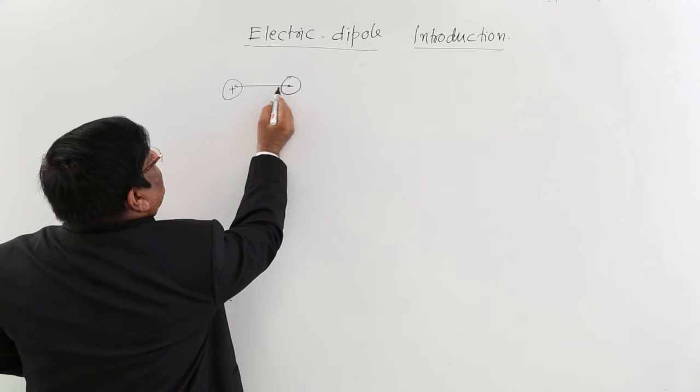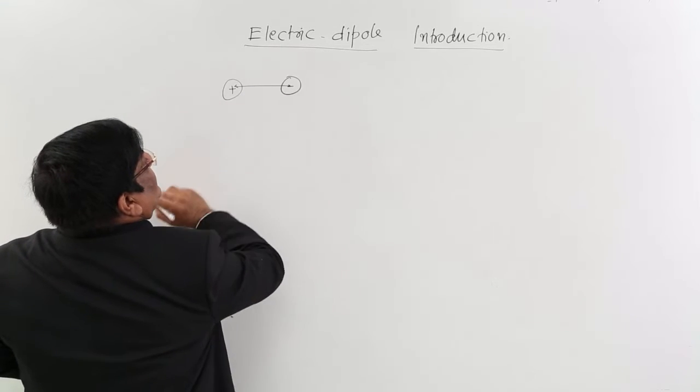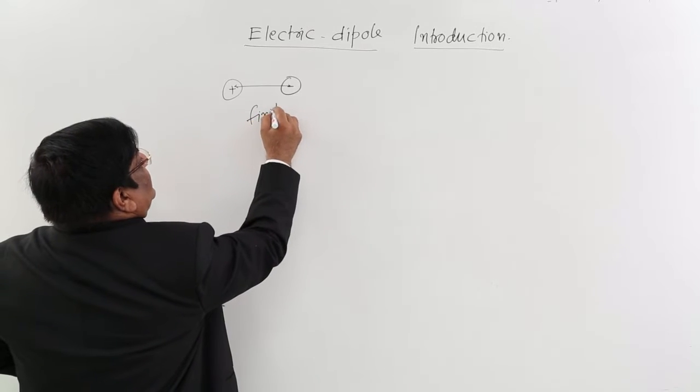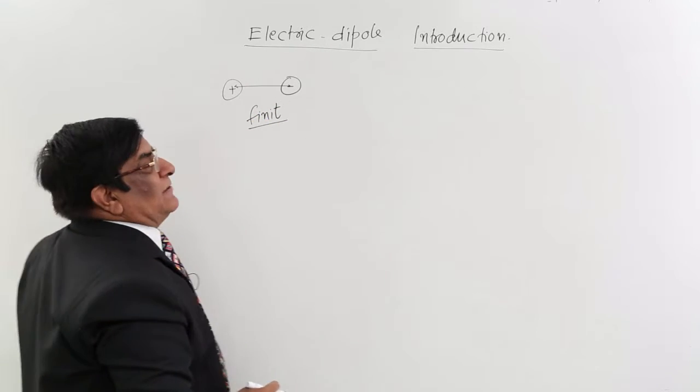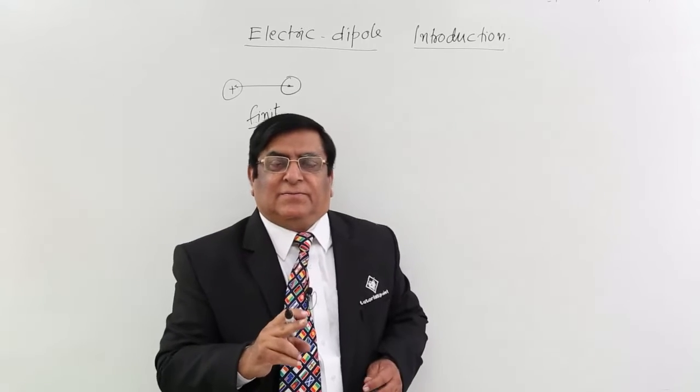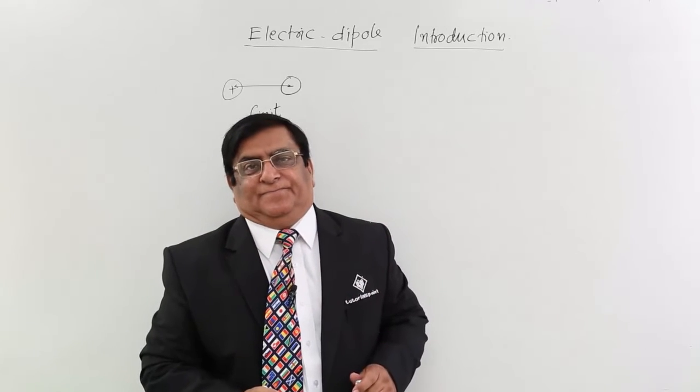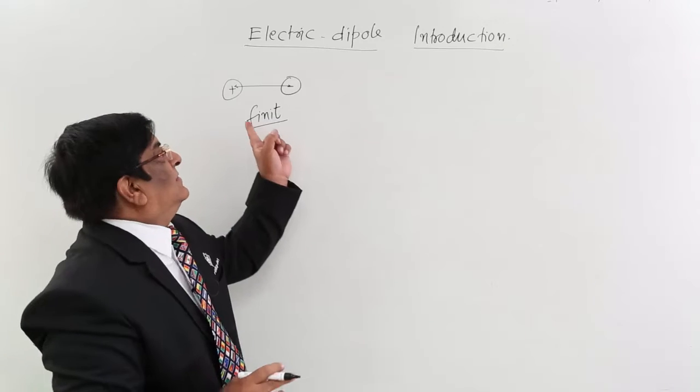There is a distance between them. This distance is a finite distance. When I use the word finite, that means it is fixed and it will neither decrease nor increase. So that is a finite distance.